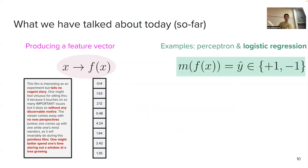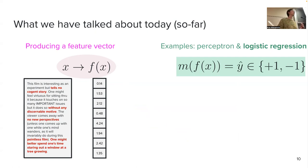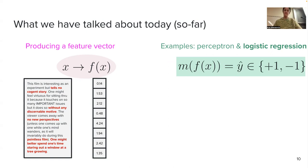This brings me to the end of the logistic regression section. I think now you have at least two examples and maybe you're a little more comfortable with how this pipeline works. Working through your assignment implementations will really cement these ideas.